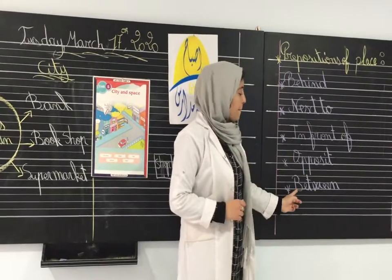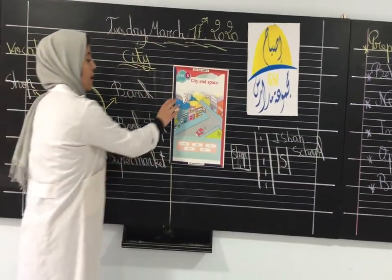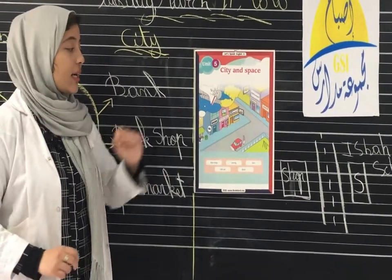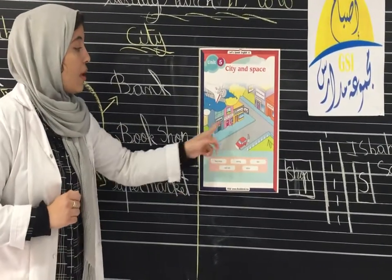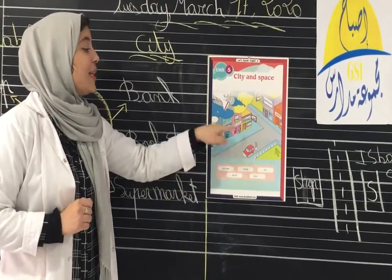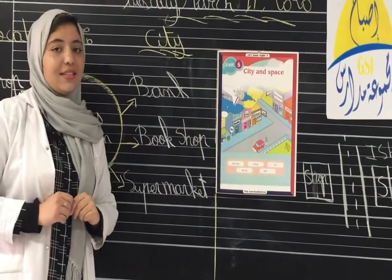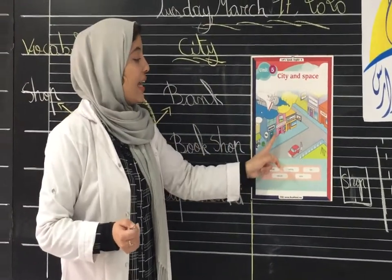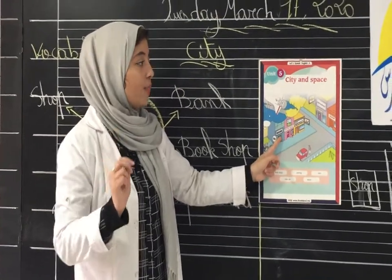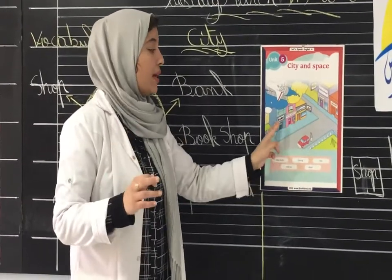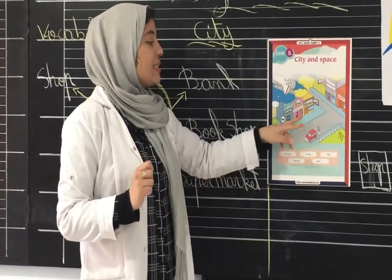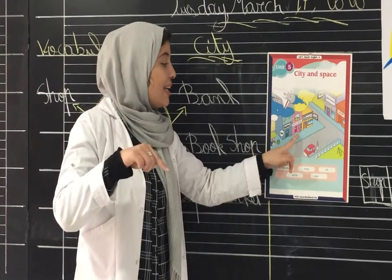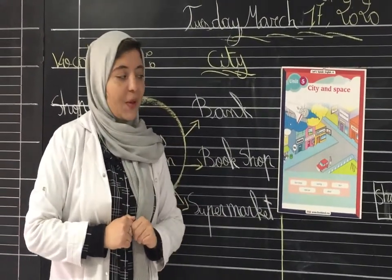Now let's see 'between.' Let's return to the picture here. I have a bank, a bookshop, and a supermarket. Where is the bookshop? It is between the bank and the supermarket. Is it behind the bank? No. Is it next to? Maybe, but here we have two places — bank and supermarket. Is it opposite? No, we don't have a street here. So it is between the bank and the supermarket.